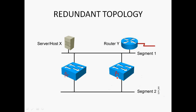Let's look at a relevant topology. In this scenario, this is Switch A and this is Switch B. Host X is connected to Switch A Fast Ethernet 0/3 port. Fast Ethernet 0/1 and 0/2 are the uplink ports. Switch A Fast Ethernet 0/1 is connected to Switch B Fast Ethernet 1/0, and 0/2 is connected to Switch B Fast Ethernet 0/2.